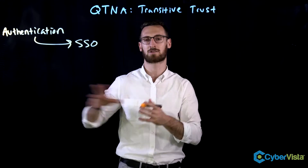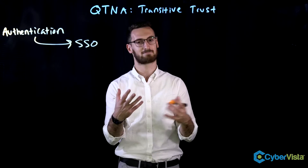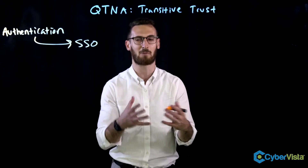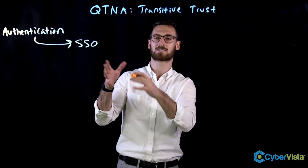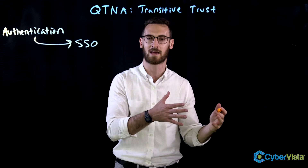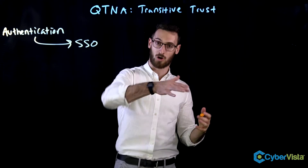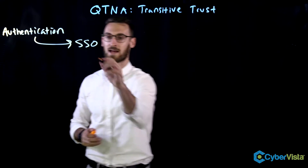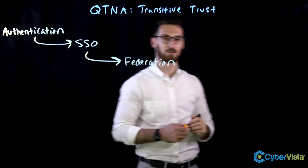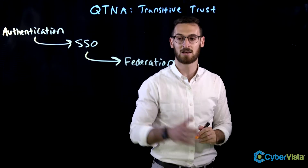So I authenticate, then I can print to the printer — that's great. But it's time to grow up. We want to do single sign-on over the internet in the modern day. When we do single sign-on across the internet, that's called a federation or a federated identity.